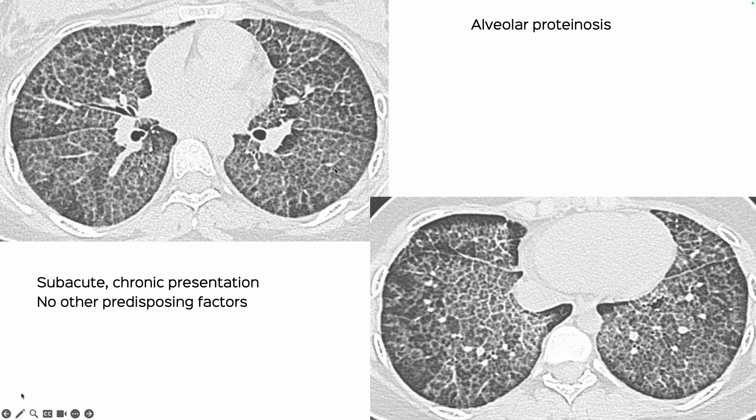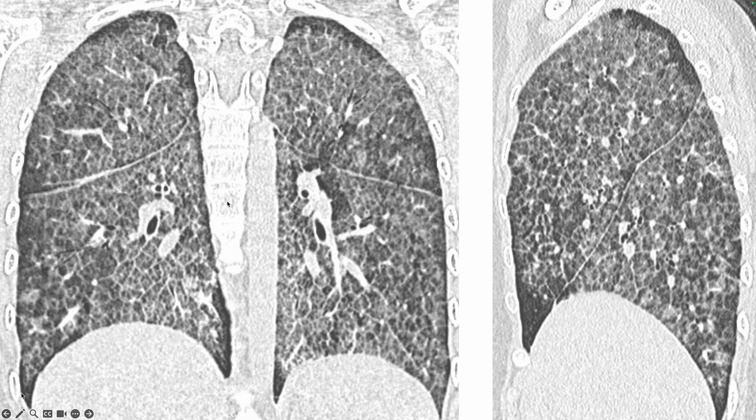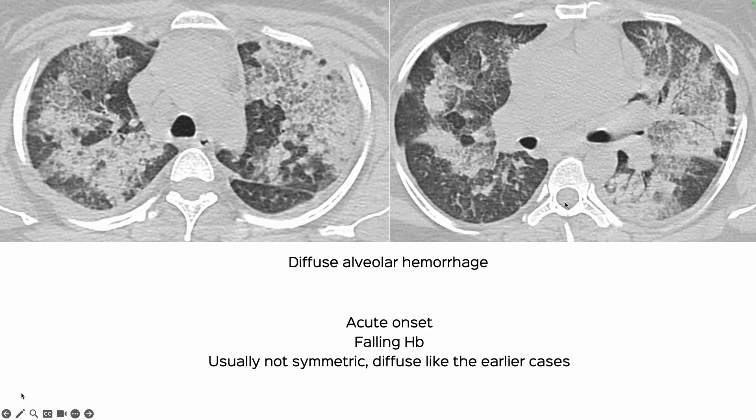The archetypical diagnosis is alveolar proteinosis — subacute to chronic presentation, no other predisposing factors. You can have secondary alveolar proteinosis due to another interstitial lung disease or drugs like sirolimus. The classic appearance is diffuse, typically symmetric septal thickening and ground glass together — your classic crazy paving pattern — as seen on coronal and sagittal images.